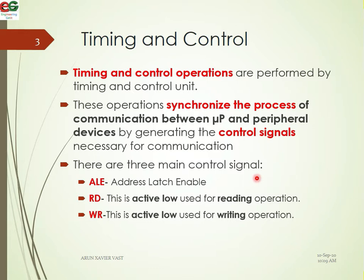Timing and Control is a block inside the microprocessor, and that block will control all the operations in the microprocessor. The timing and control operations are performed by the Timing and Control Unit — a unit inside the architecture of the microprocessor. That unit operates all the timing and control functions inside the microprocessor, and this operation synchronizes the process of communication between the microprocessor and peripheral devices by generating the necessary control signals.